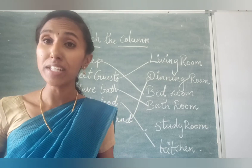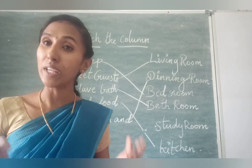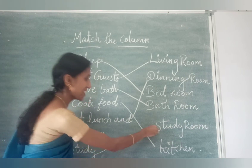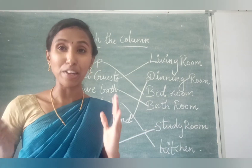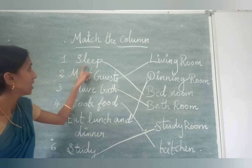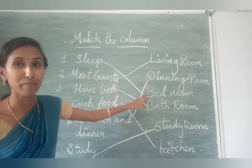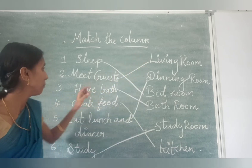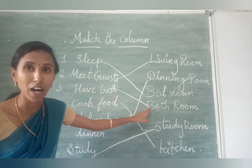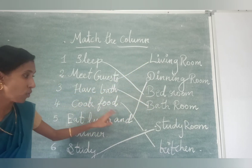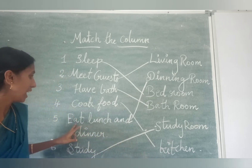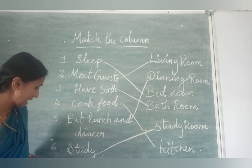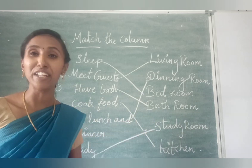Where do we study? We study in the study room. Study — Study room. Children, I repeat once again: We sleep in the bedroom. Meet guests — living room. Have bath — bathroom. Cook food — kitchen. Eat lunch and dinner — dining room. Study — study room.